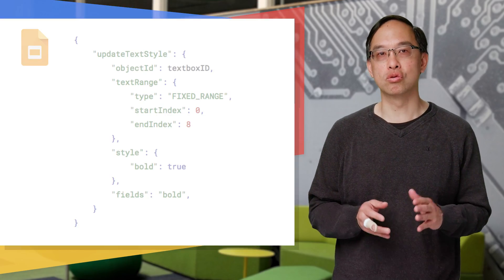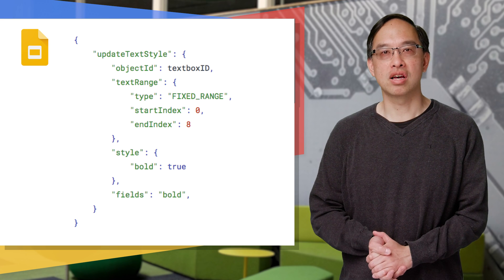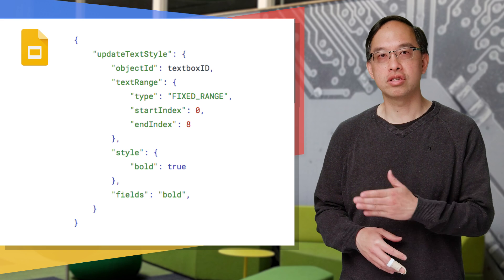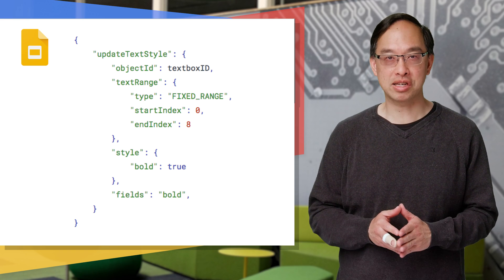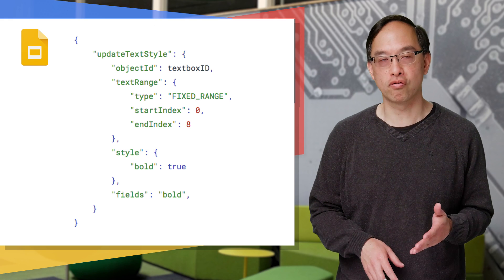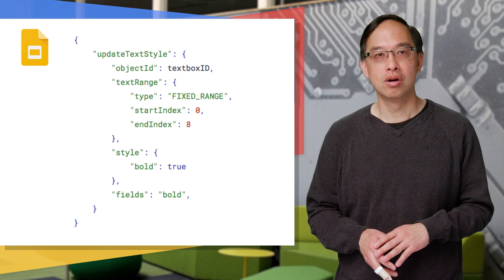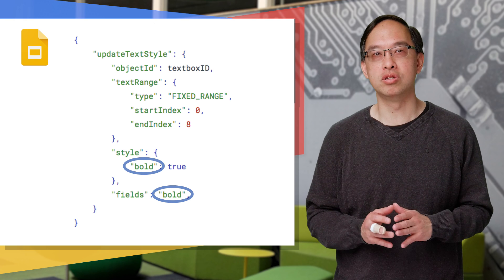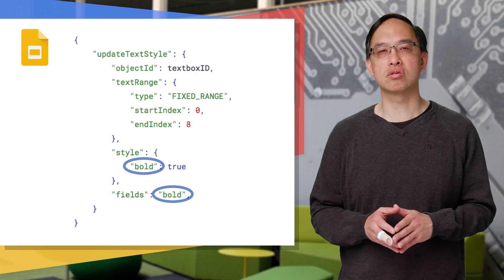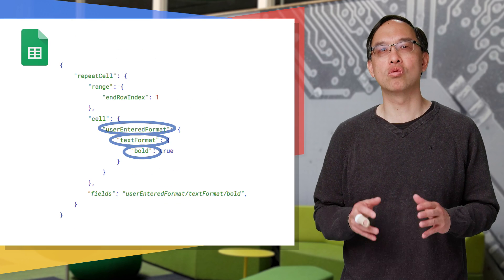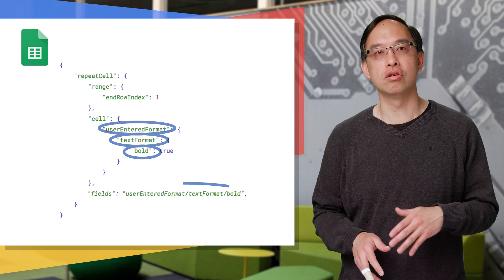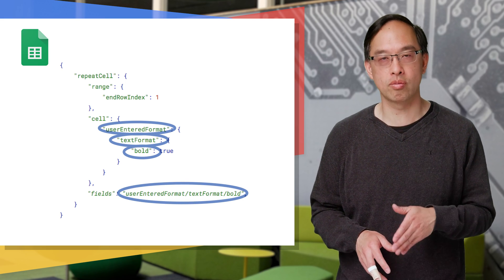Now let's bold some text with Google Slides. Instead of cells, it's text on the slide. Given you already have the text box ID, this JSON bolds the first eight characters in the text box. Notice that the fields value is simpler here — no userEnteredFormat/textFormat — because the root object for the Slides request is style. Whereas for Sheets, the root object was cell, meaning you needed the full path from the cell down to the bold flag: userEnteredFormat/textFormat/bold.